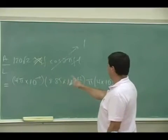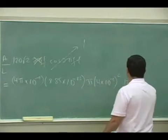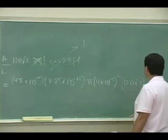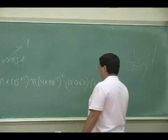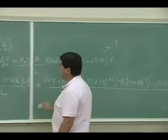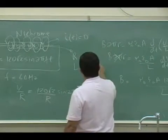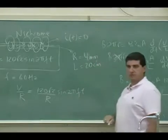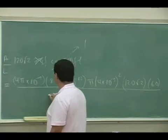So that's 4π, that's ε₀, that's πr². This is 120√2 times 60 divided by, and then I would have to give you the length of the wire. Let's say 20 centimeters. So that's 0.2 meters.